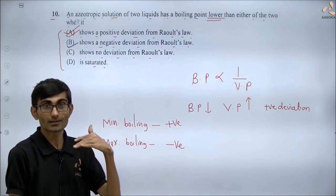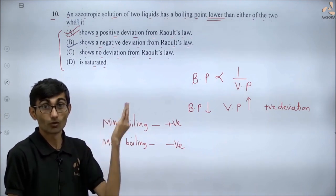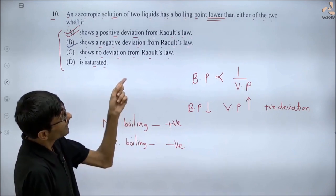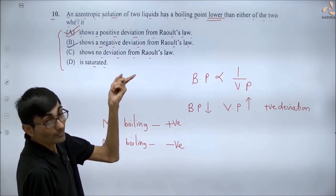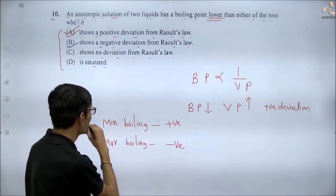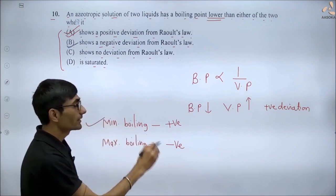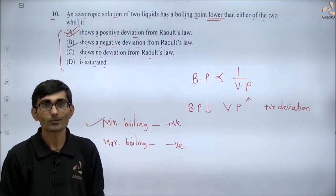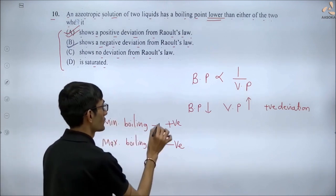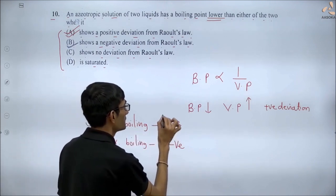Minimum boiling azeotrope में boiling point कम हो जाता था। यहां question में क्या हो रहा है? Boiling point lower — मतलब यह minimum boiling azeotrope का case है, तो होगा positive deviation.